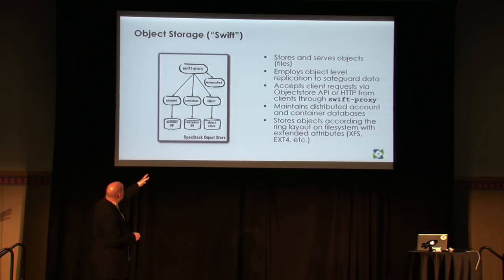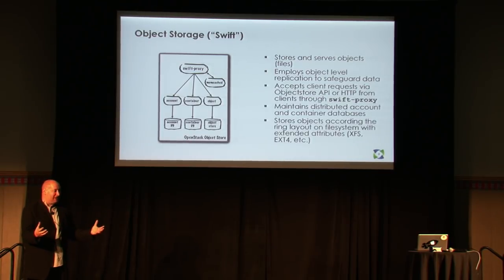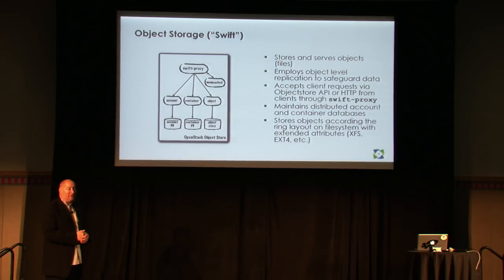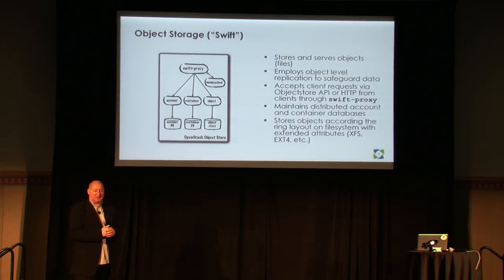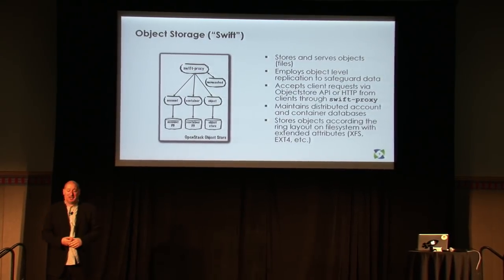From a logical point of view, Swift's architecture is fairly simple. But from a physical point of view, when you actually implement it, it tends to be much more complicated — because you want a very large store. This can be 50, 200, or 500 machines implementing it, with just a few running Swift proxy and most of the others running the account, container, and object databases.